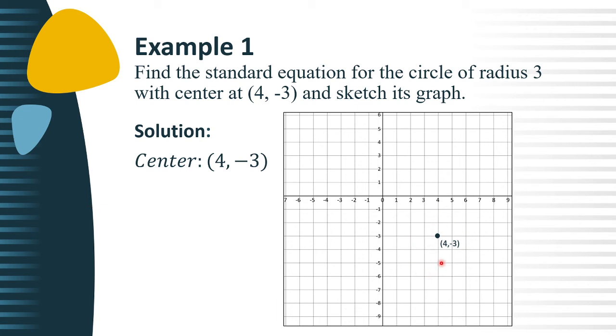Next, on the axes, plot the 4 points of the circle using the given radius. In this case, we have positive 3 as the distance from the center.